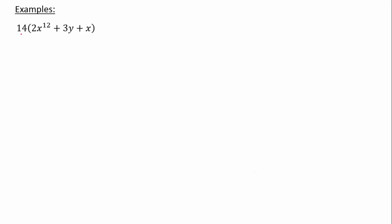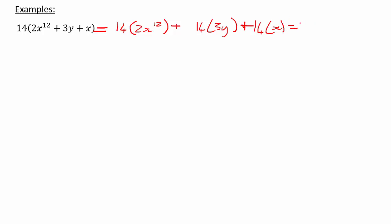Let's now practice some examples. 14 times (2x¹² + 3y + x). That is going to be 14 times 2x¹², which is 28x¹², plus 14 times 3y which is 42y, plus 14 times x which is 14x. And that is our answer.